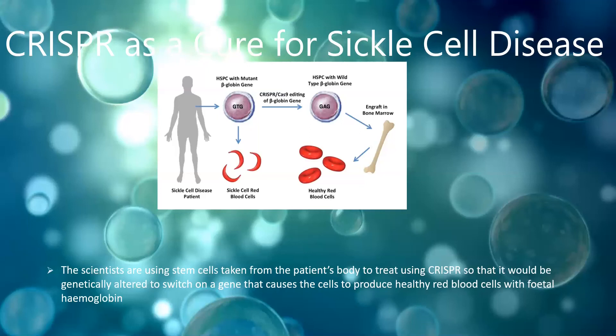Another issue is that there could be an immune response, causing cells of the body to be attacked. This risk has been minimised by the fact that they could use the patient's own stem cells, which would not be recognised as foreign objects. As scientists across the world research CRISPR as a cure for sickle cell disease, there is no guarantee it will work, but CRISPR is the biggest leap scientists have had in genetic engineering and could cure many genetic diseases, including sickle cell disease, in the future.